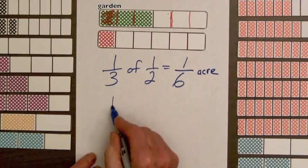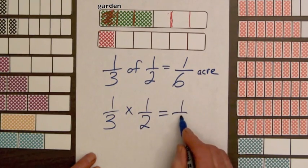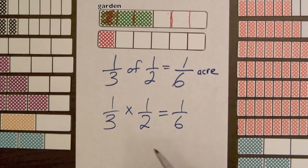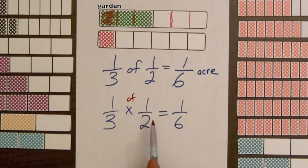And as before, we can write one-third times one-half equals one-sixth. We can continue with these little reminders. By multiplying, we are taking one-third of one-half.